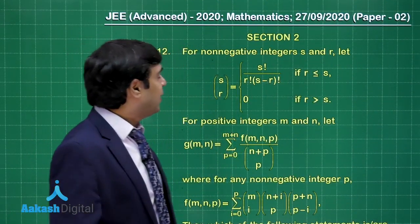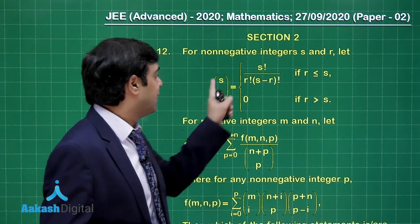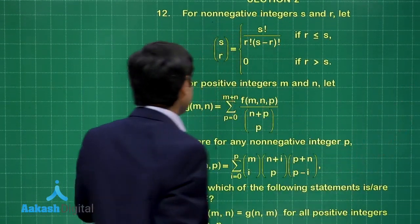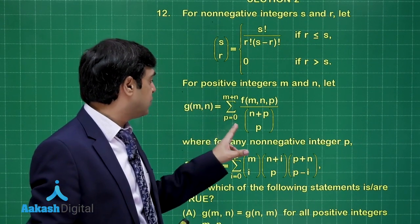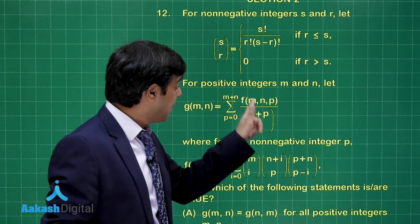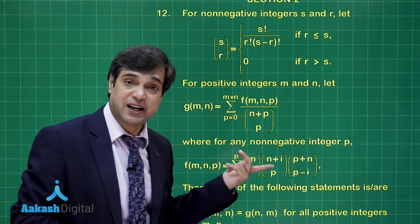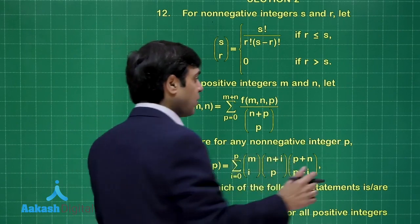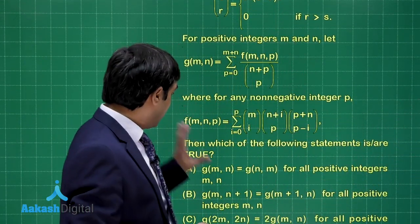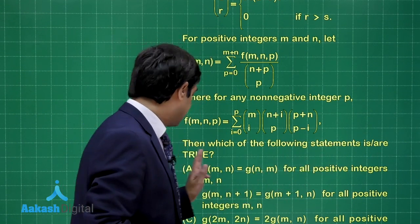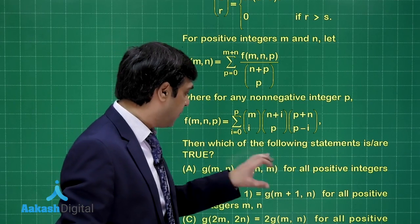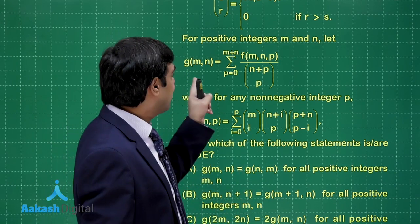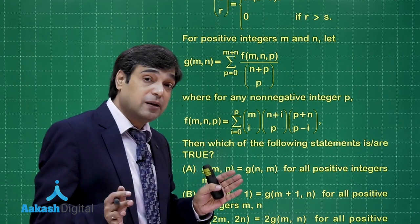For non-negative integers S and R, binomial coefficients are defined in the standard way. G(M,N) is defined as summation from P=0 to M+N of F(M,N,P) divided by (N+P)CP. F(M,N,P) is defined further in terms of these. It looks complicated, but let us check whether it is. We need to find G(M,N), and determine whether G(M,N) equals G(N,M). First, we simplify F(M,N,P).